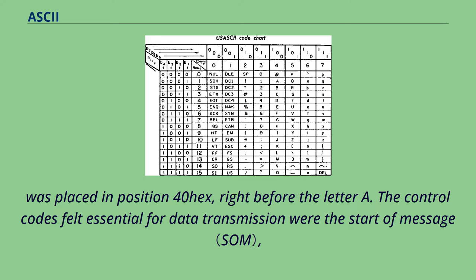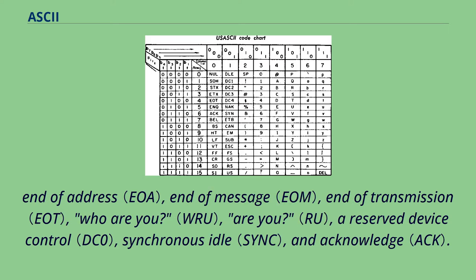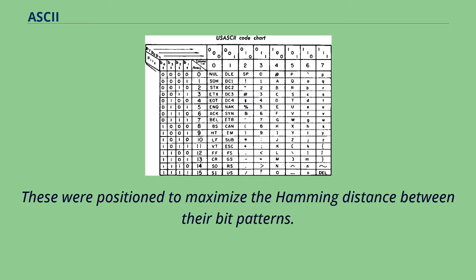The control codes felt essential for data transmission were the start of message, end of address, end of message, end of transmission, who are you, reserved device control, synchronous idle, and acknowledge. These were positioned to maximize the Hamming distance between their bit patterns.